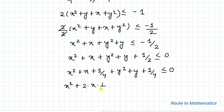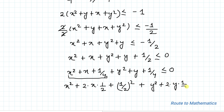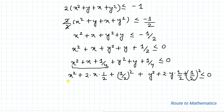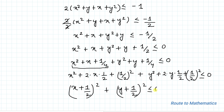This can be written as x² + 2·x·(1/2) + (1/2)² plus y² + 2·y·(1/2) + (1/2)² less than or equal to 0. Applying the algebraic identity (a + b)², we get (x + 1/2)² + (y + 1/2)² less than or equal to 0.